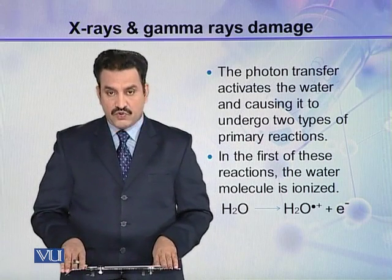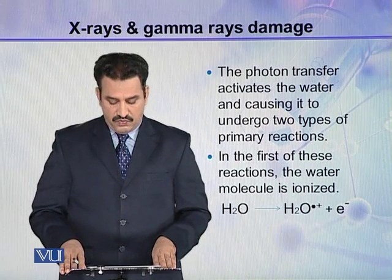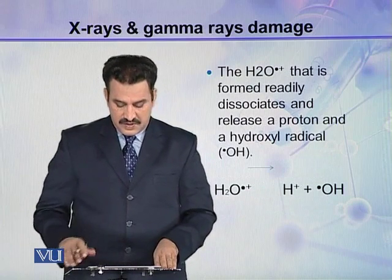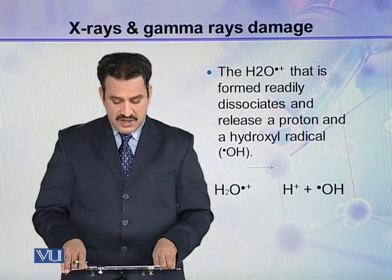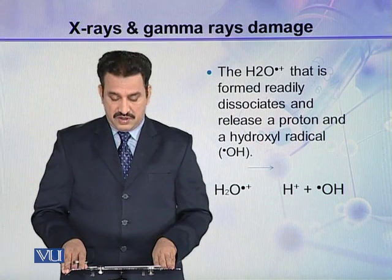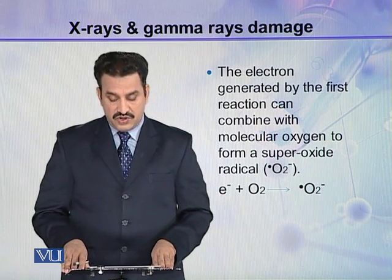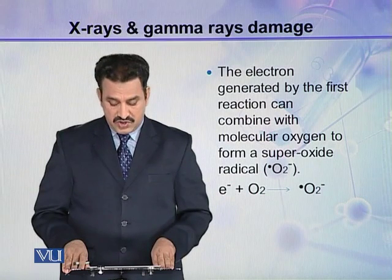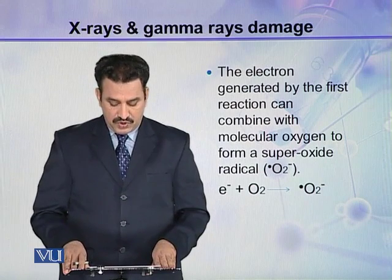The photon transfer activates the water, causing it to undergo two types of primary reactions. In the first reaction, the water molecule is excited and then ionized. The H₂O⁺ ion that is formed readily dissociates, releasing a proton and a hydroxyl radical. The electron generated by this first reaction can then combine with molecular oxygen to form a superoxide radical.